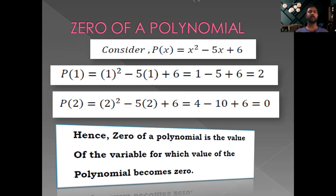A polynomial can have more than one zero, and the key idea is that the degree of the polynomial equals the number of zeros. Since x square minus 5x plus 6 is a quadratic polynomial of degree 2, it will possess two zeros. A cubic polynomial of degree 3 will possess three zeros.